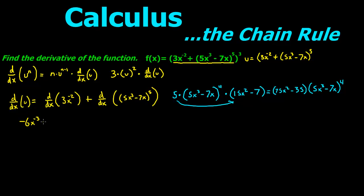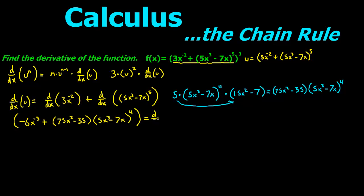So now what we're going to do is take this piece and add the derivative of what we found over here. So it's going to be 75x squared minus 35 times 5x cubed minus 7x all to the fourth power, and that gives us our derivative of u.